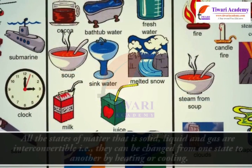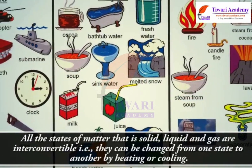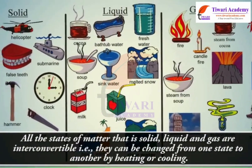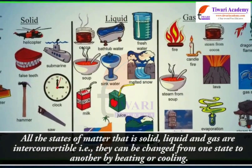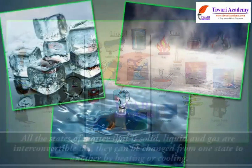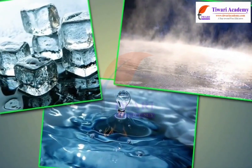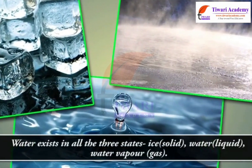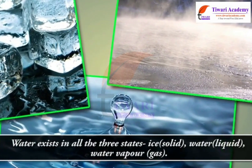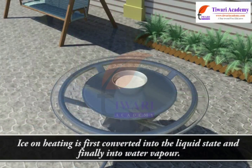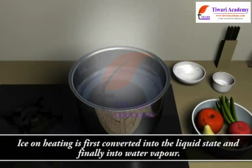All the states of matter — solid, liquid, and gas — are interconvertible; they can be changed from one state to another by heating or cooling. For example, water exists in all three states: ice (solid), water (liquid), and water vapor (gas). Ice on heating is first converted into the liquid state and finally into water vapor.